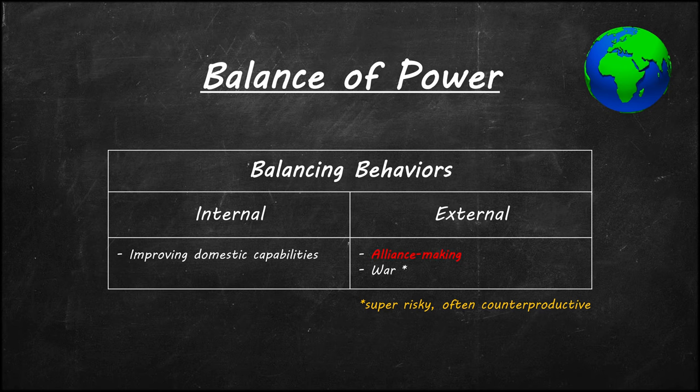External balancing is the opposite. Whenever a state does something to balance the power outside of its own capabilities, it's called external balancing. Making allies is a common external balancing behavior. States form allies with other states to balance against a more powerful state. War can also be an external balancing behavior, which can weaken or eliminate other states to improve the relative power of the victorious state. However, wars are also very risky and incredibly costly, so even a victorious state may end up in a weaker position than before. This is why many realists are very conservative regarding military action.